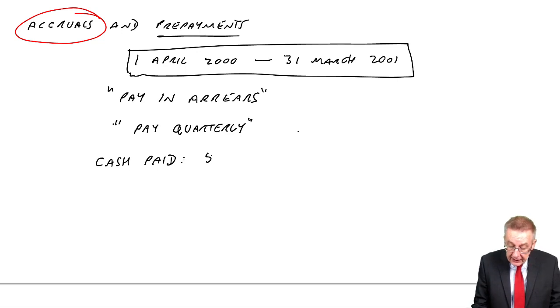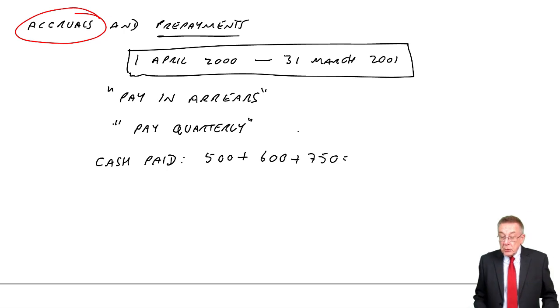in July, he paid 500. In October, he paid 600. In January, 750. So the total cash paid is 1850.